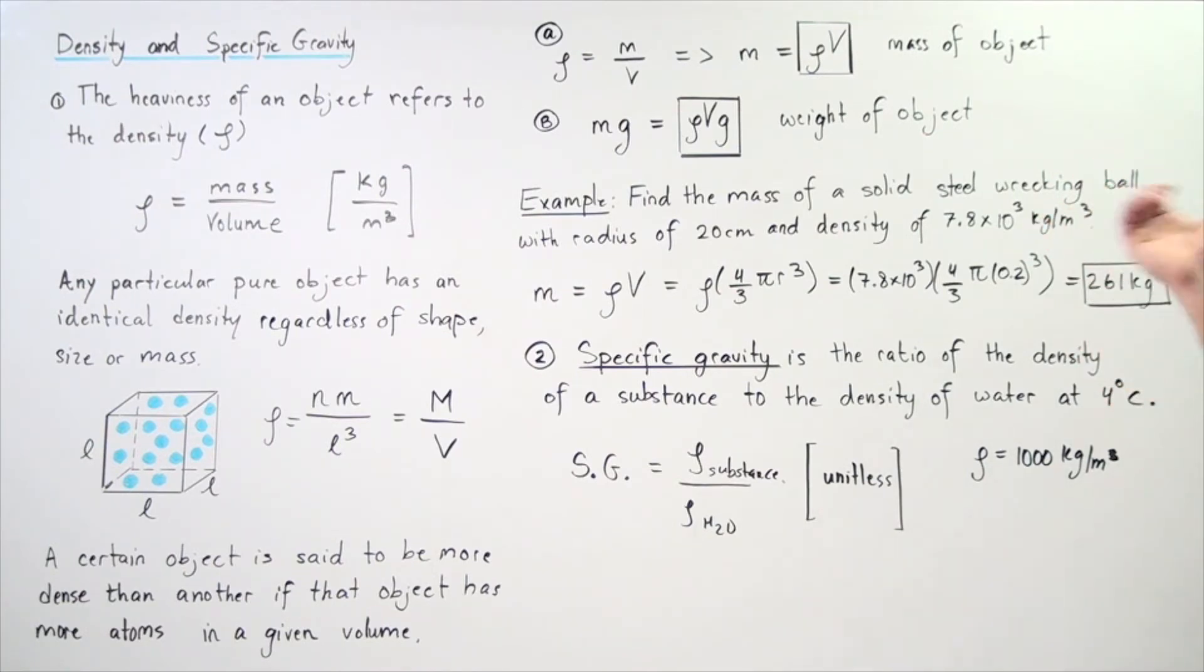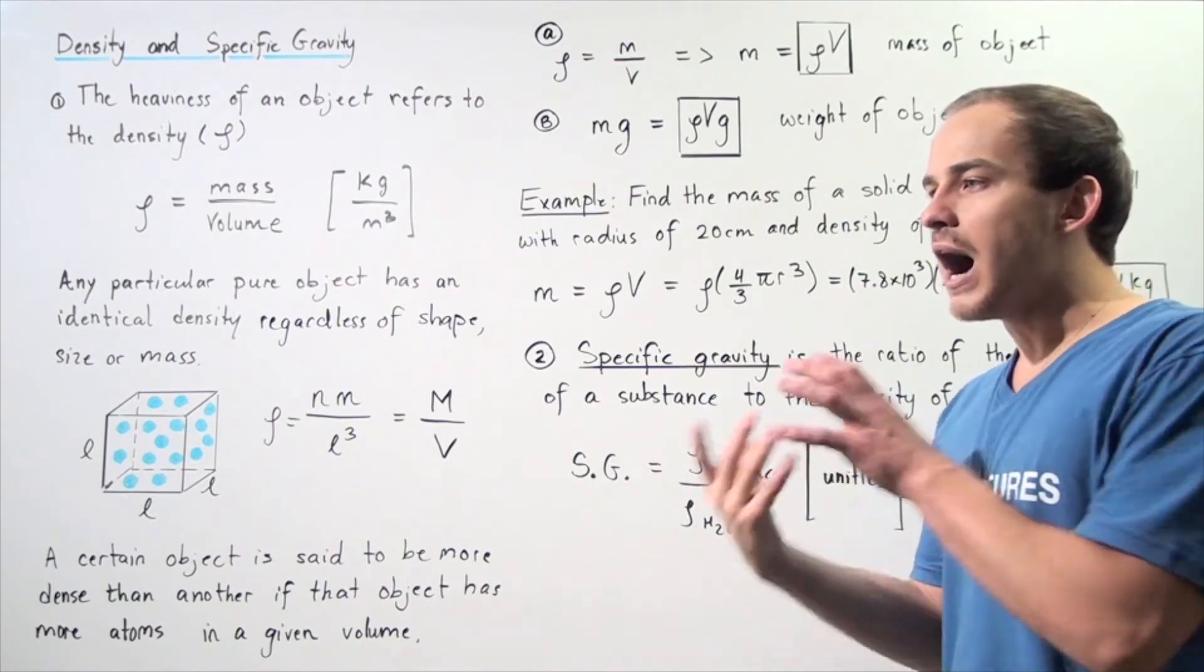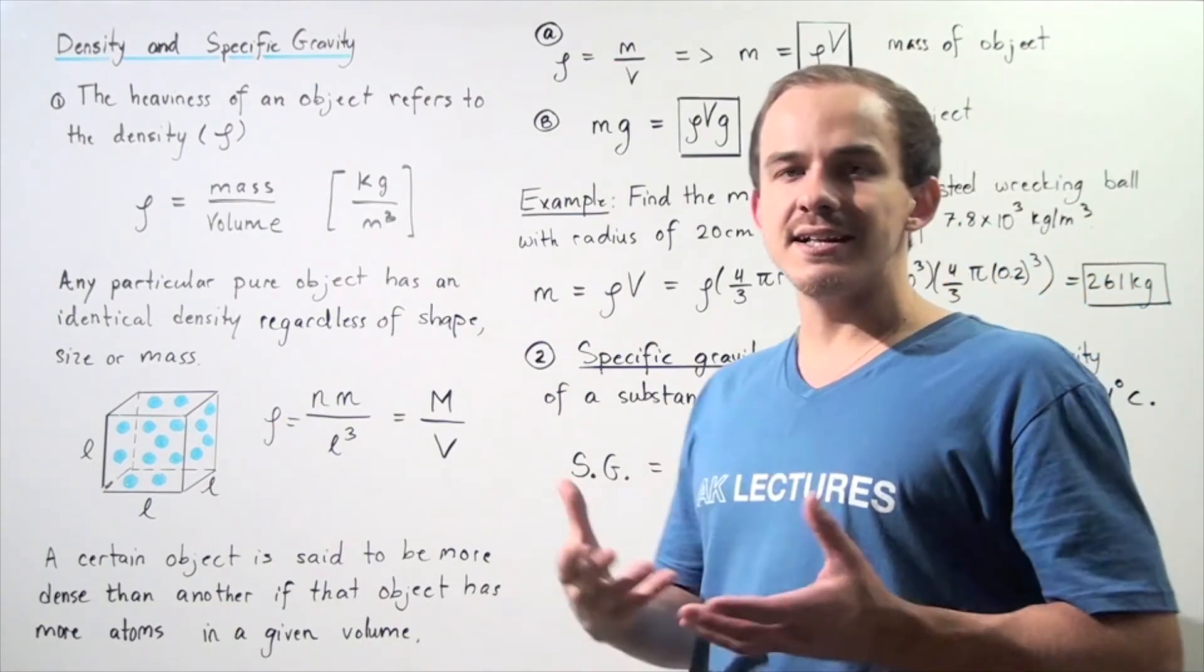This is the mass of the steel wrecking ball, and we found the mass by taking the product of the volume of the sphere and the density of steel.